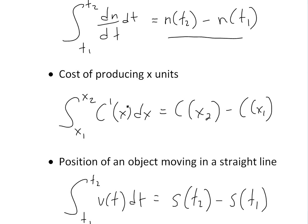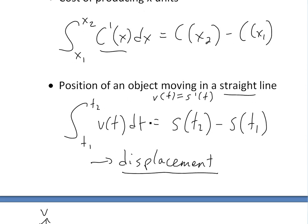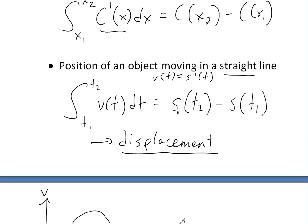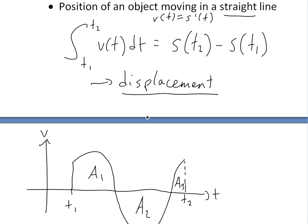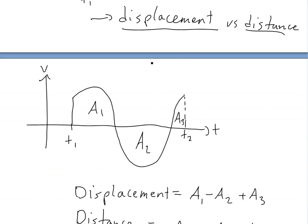Basically the cost of producing x items: if this is the marginal cost — you'll see a video link below on marginal cost — then the total cost increase is the integral of the rate of change of the cost. Now this one is interesting: if you look at the position of an object moving in a straight line, the velocity is the derivative of the position function S. Then once you do this integral, it gives you the displacement, or the net change of the position.